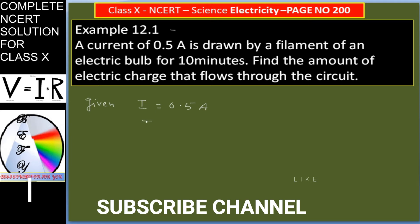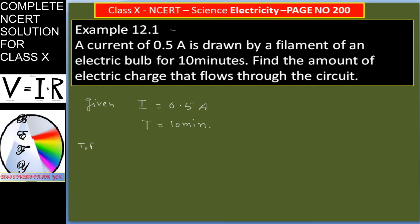Find the amount of electric charge that flows through the circuit. So we have to find out the amount of electric charge. To find out Q, I is given, T is given, our aim is to find out Q.